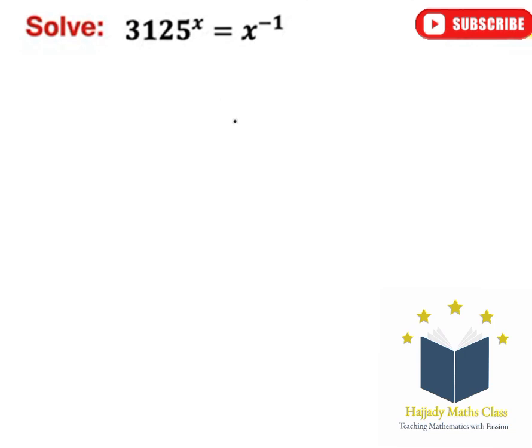Before we proceed, please don't forget to give this a thumbs up. So we have 3125 to the power of x equals 1 over x. That is, rewriting x to the power of negative 1 can be written as 1 over x.